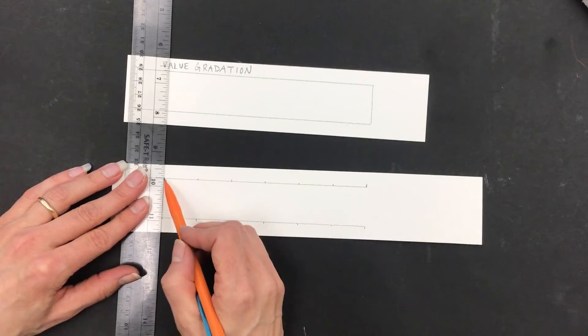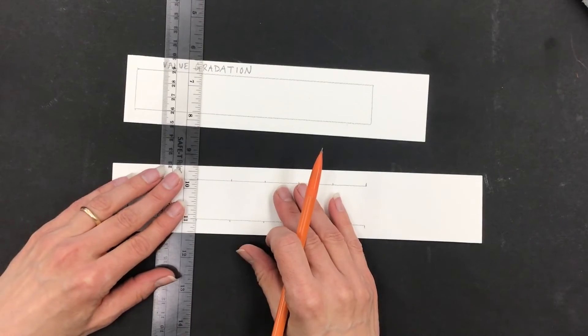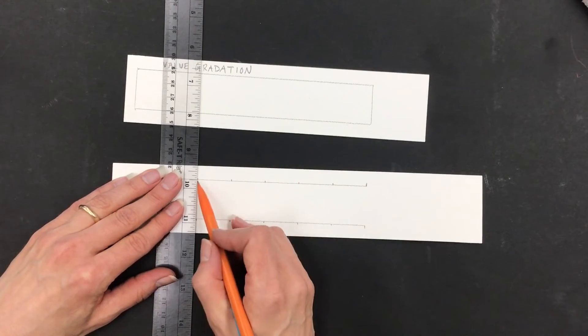Because remember, this one's going to be the value scale, so I need distinct boxes so that I can practice my skills of keeping the color within those.